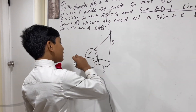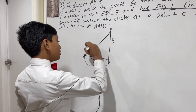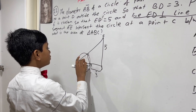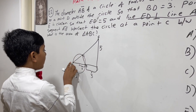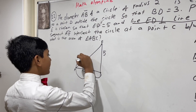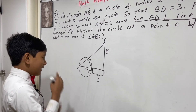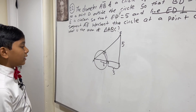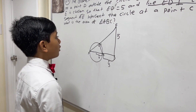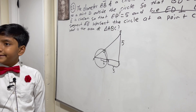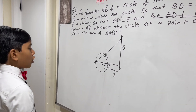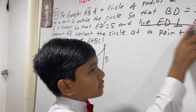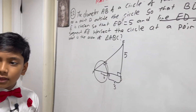Anyways, since this triangle is inscribed in a circle, it must be right. Any triangle whose hypotenuse is the same as the diameter of a circle is a right triangle. We also know this is right because line ED is perpendicular to line AD.